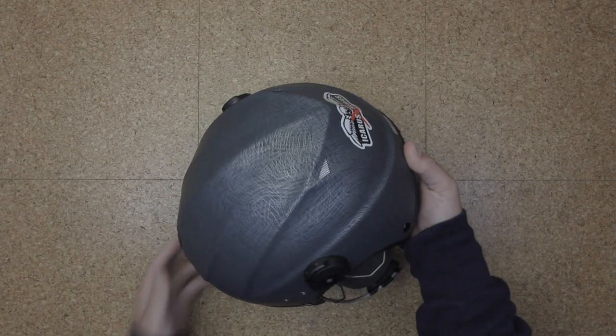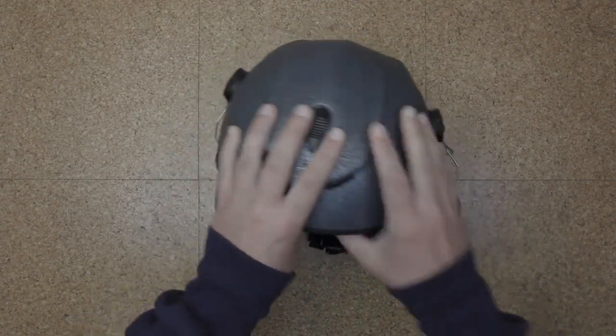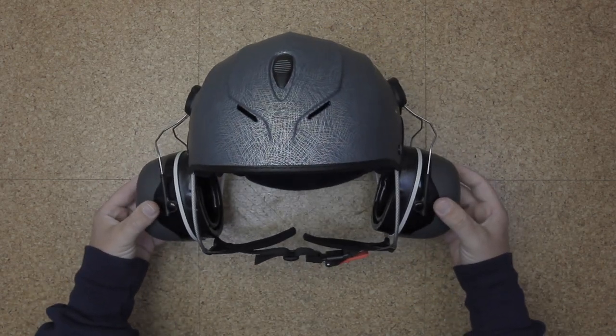Let's start with the helmet. I have the Icaro Solar X in limited edition scratch grey. Paired with the helmet I have the Peltor 3M X5 ear defenders. They're extra deep, extra big, ideal for this project.